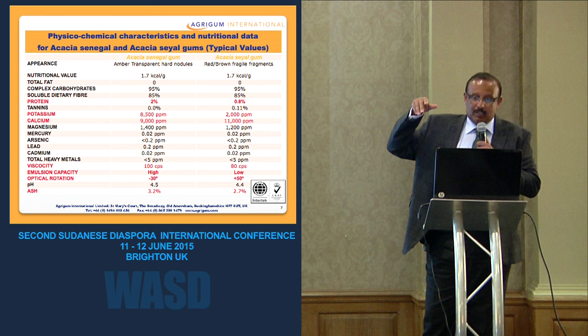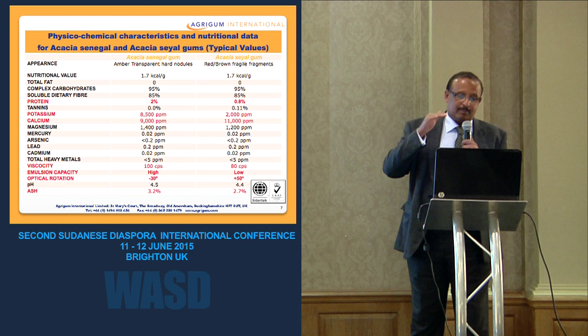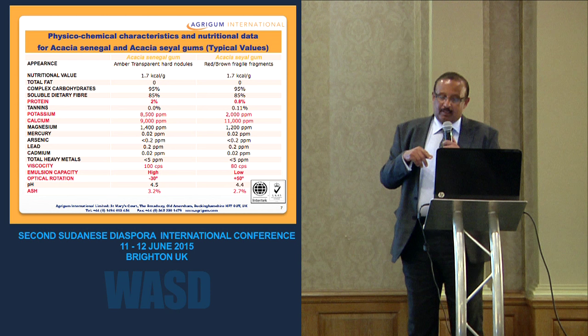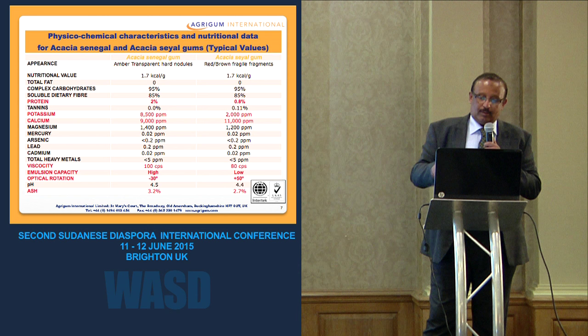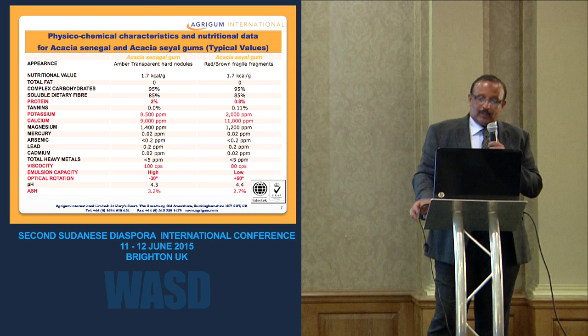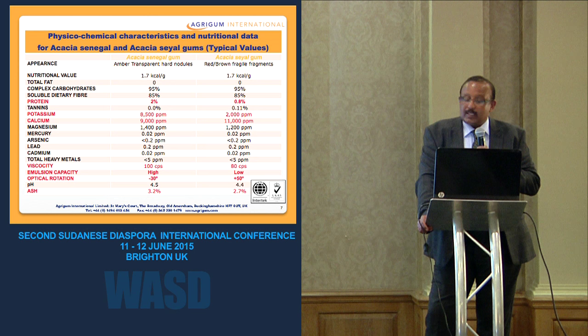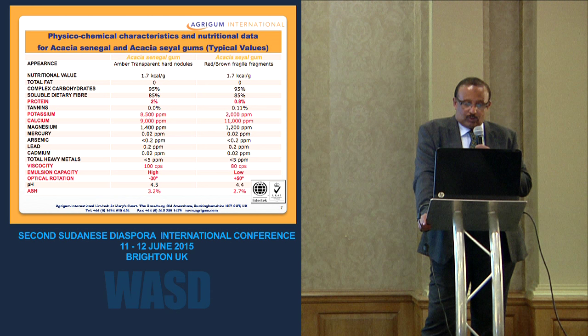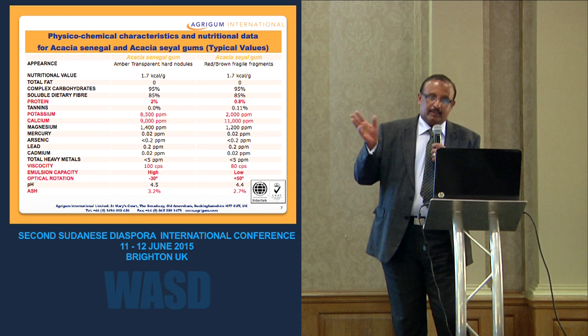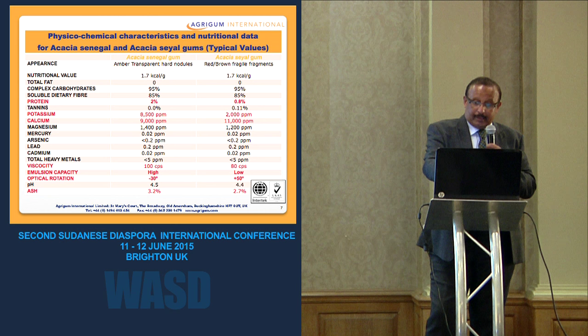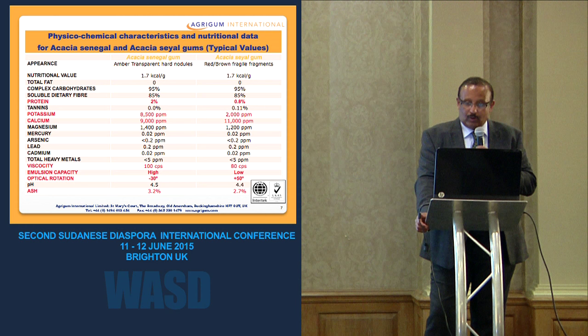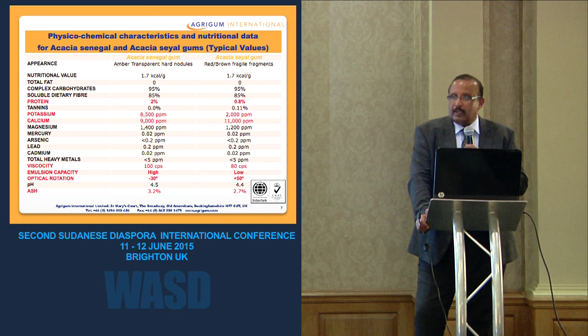The main difference between the two species is that Senegal is considered the premier product because it's lighter in color and has wider applications. Talha gum is less expensive, darker in color, and used in different applications. Acacia Senegal has about 2% protein, making it more suitable for emulsions and beverages, while Talha gum is used in coating and binding. This is why emulsion capacity is high in Senegal and low in Sayal.